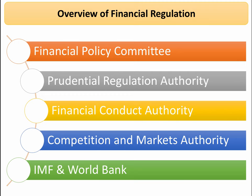In terms of the UK context, there are four main authorities to think about: the Bank of England's Financial Policy Committee, the Prudential Regulation Authority, and the Financial Conduct Authority — specifically geared to financial markets. A slightly wider remit is given to the Competition and Markets Authority. And thinking outside the UK, financial regulation could also involve organisations such as the IMF and the World Bank.